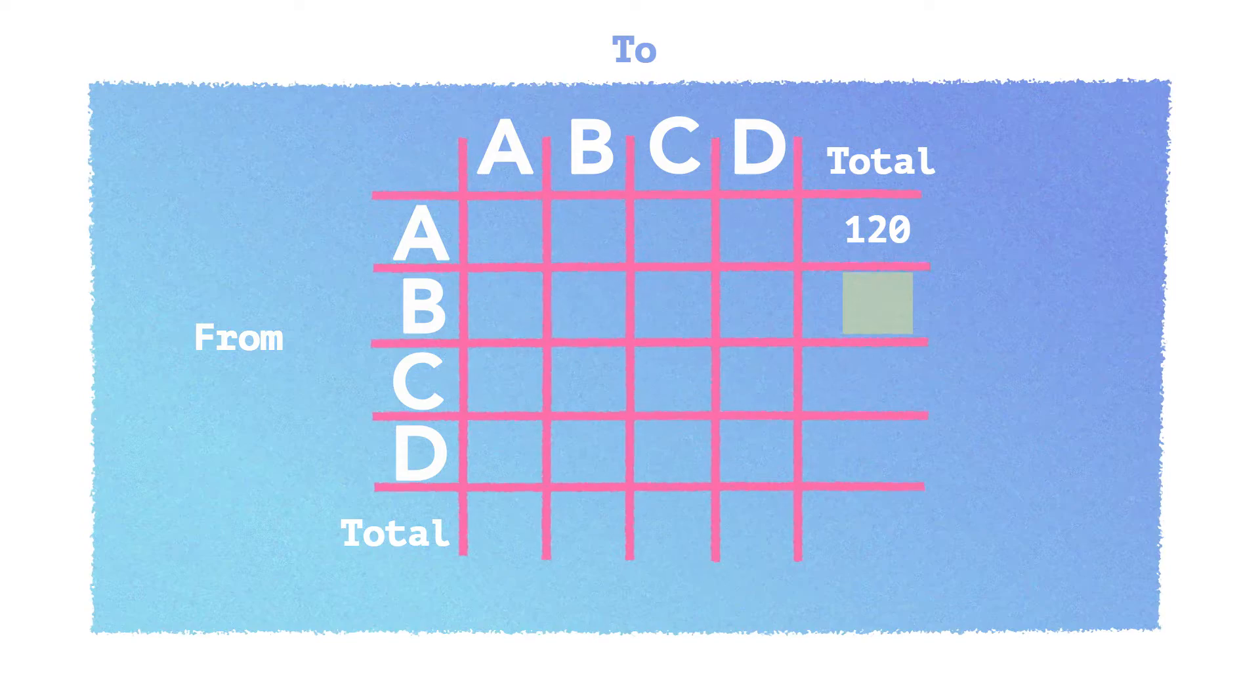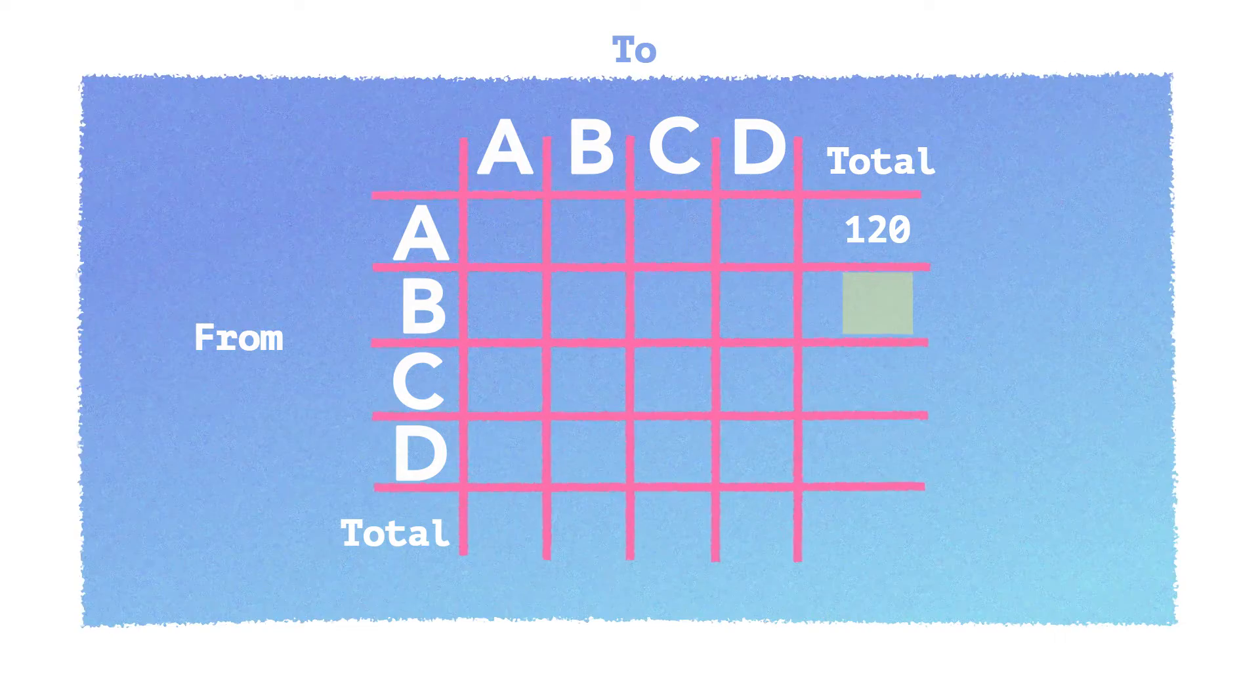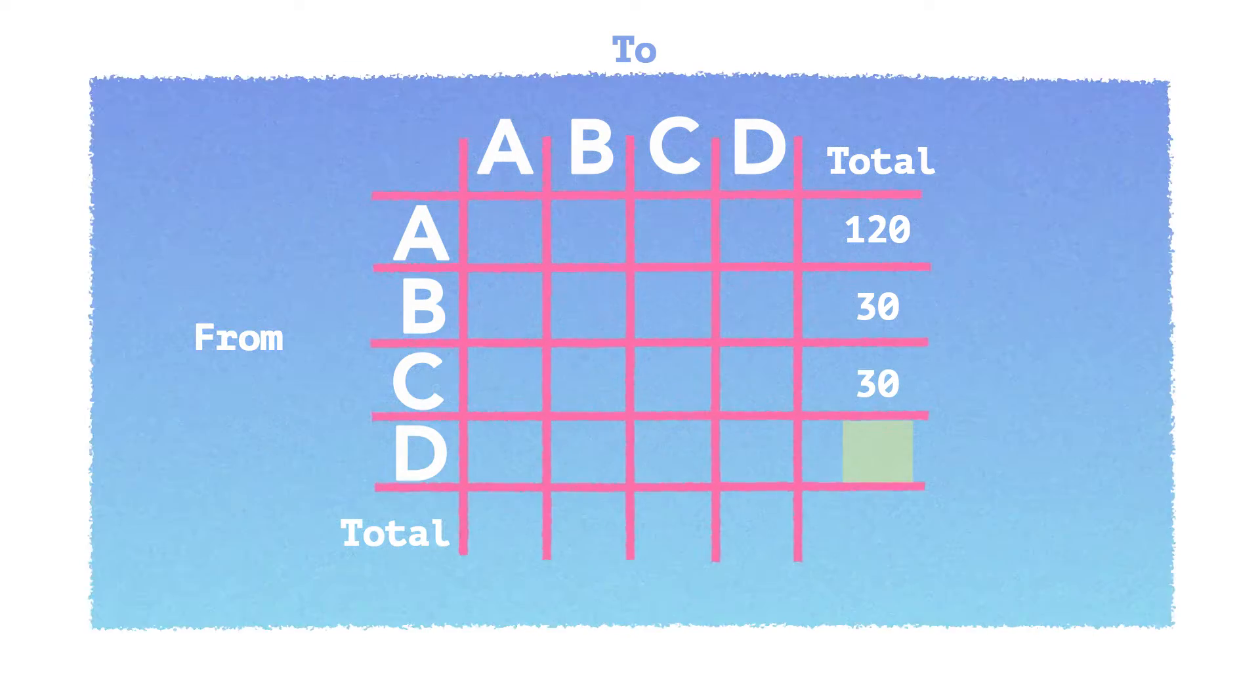Then you can do that on each of them. So if you do that for each of them, you've got 30, 30 and 50.